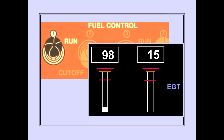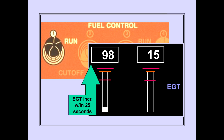When the fuel control switch is in run, EGT should increase within 25 seconds. This indicates light off has occurred. EGT rise should stay within start limits.